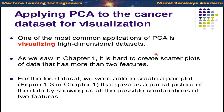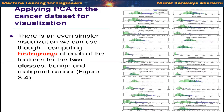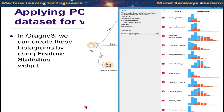Let's take the breast cancer dataset, which has 30 features. For each feature we can only draw a two-dimensional space. If we compare all features with each other, we would need to draw 420 different scatter plots and look at all of them to understand which features are related. That's not easy. One alternative is to use histograms, which show the distribution of each feature — in the cancer dataset we have two classes: benign and malignant.